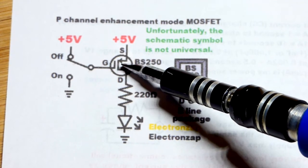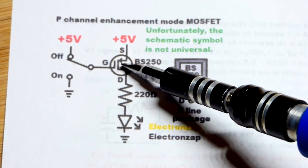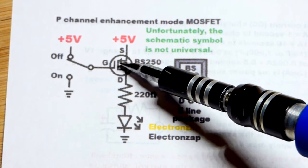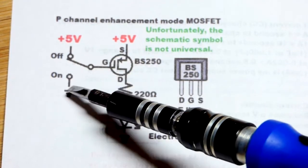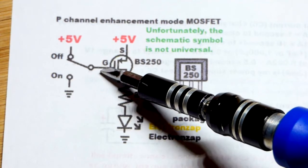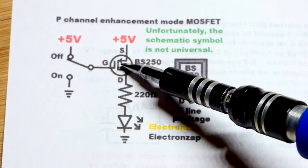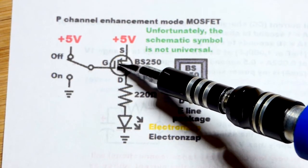Since it's P-channel enhancement mode, that means it conducts better when the channel gets more positive. And thus it's off because it's more negative. Now we get the gate more negative. That makes the channel more positive. As I said before, that's when it conducts better.